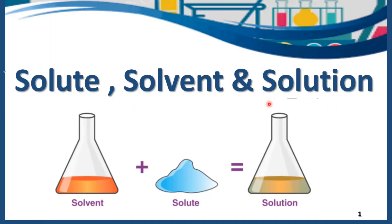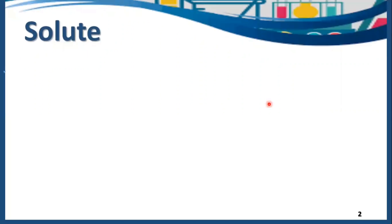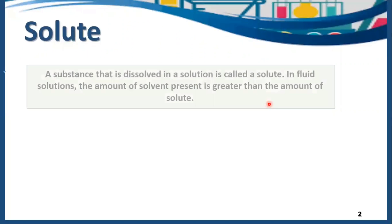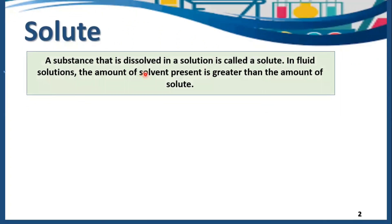So at first let's talk about solute. A substance that is dissolved in a solution is actually called a solute. In fluid solutions the amount of solvent present is greater than the amount of solute. What does that mean? It means the amount of solute is smaller than the amount of solvent.